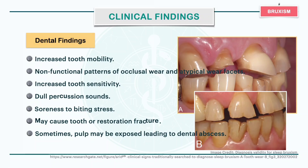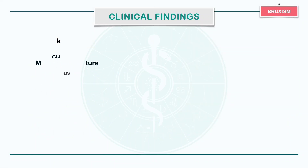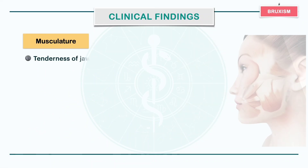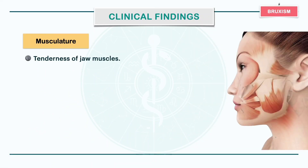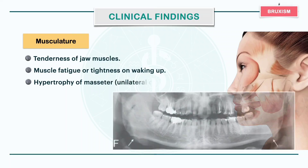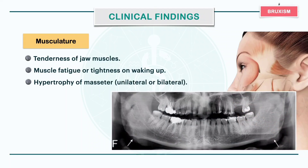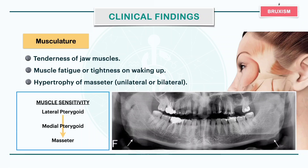Along with these, the patient presents with tenderness of jaw muscles, usually the lateral pterygoid and masseter, muscle fatigue or tightness on waking up, unilateral or bilateral hypertrophy of masseter. The pattern of muscle sensitivity follows lateral pterygoid, medial pterygoid and then the masseter.